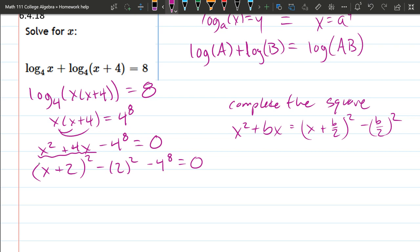Alright, so we got x appearing one time now. That was the entire reason we did complete the square. So negative 2 squared is negative 4. We're going to add 4 to the other side plus 4 to the 8th power.